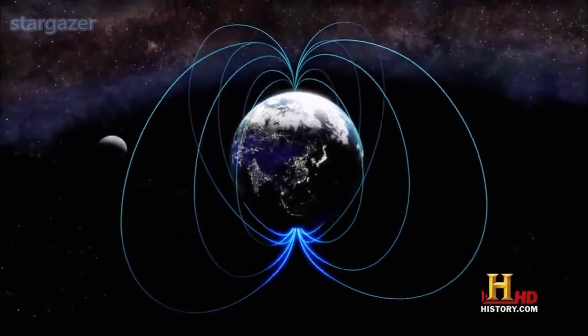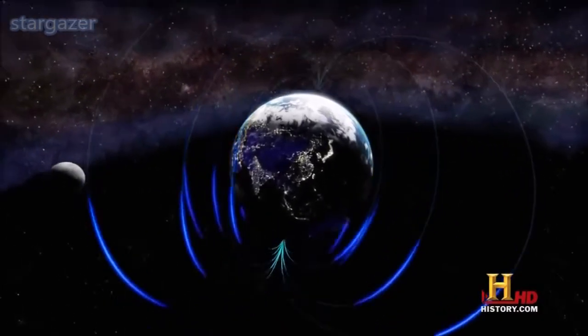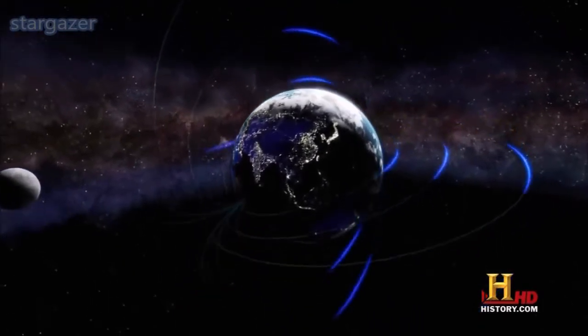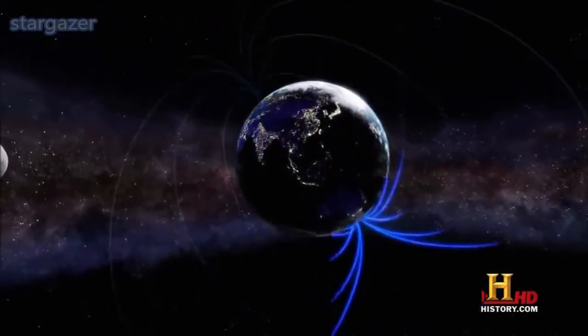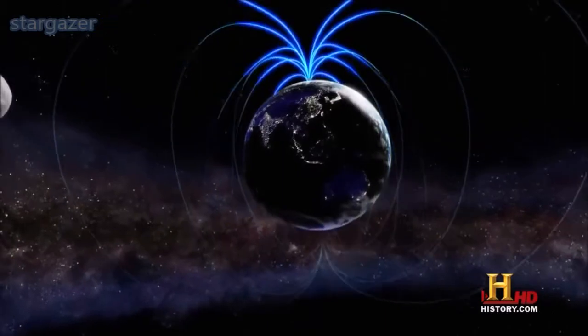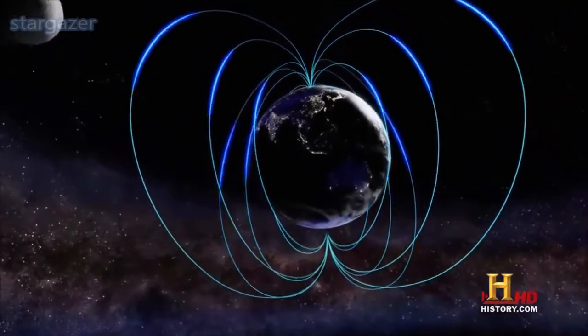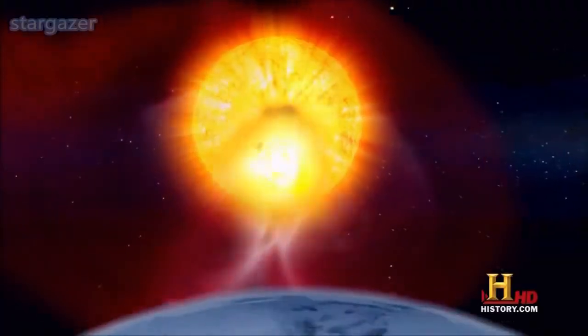A pole reversal might mean a period where there is a weakened or no magnetic field on the planet. The problem is that the magnetic field, when it gets weak, it's no longer an effective shield against particle radiation from the sun.